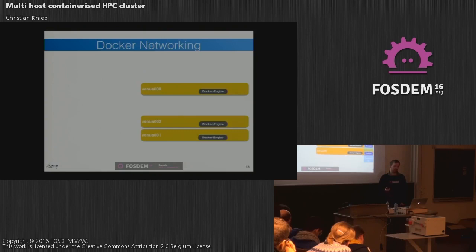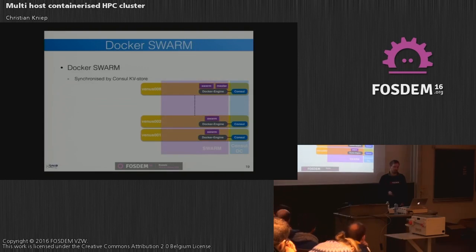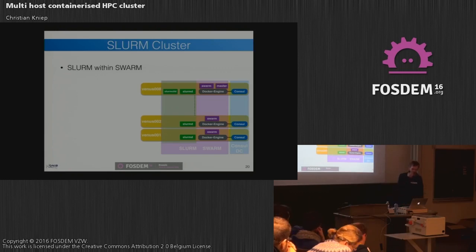So how does it look? I have these eight nodes. The Docker engines are hooked to Consul as a key-value store to synchronize the networks that are created. I put Docker Swarm on top of it — there are swarm clients I talked about and one master on one of the nodes. They also use the key-value store from Consul to synchronize. I put a Slurm cluster on eight nodes, and I will share a link to the code, playbooks, and compose files that I use.